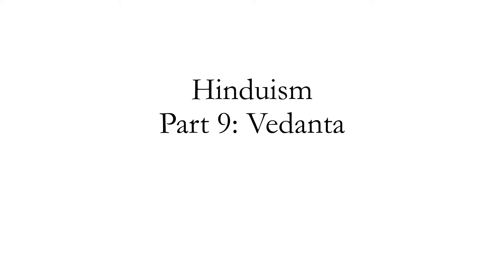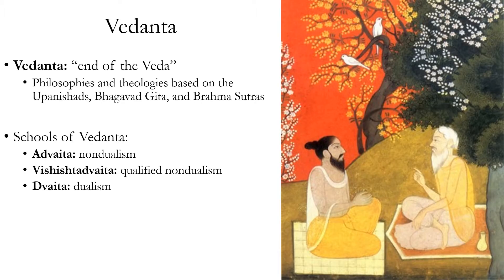Welcome back to Hinduism. In this video we're going to look at Vedanta, which is a type of Hindu philosophy. The word Vedanta means 'end of the Veda,' so this is the end of the Hindu scriptures called the Veda. The earlier part of the Veda, the Samhita, consists of hymns, chants, mantras, and formulas that are used in Vedic rituals, especially the fire sacrifices or yajnas.